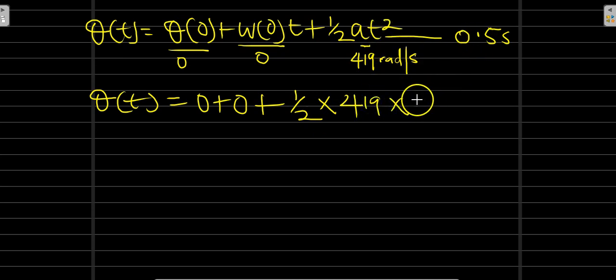Therefore we're going to have theta of t equals 0 plus 0 is 0, and one-half times 419 times 0.5 squared. 0.5 squared is going to give you 0.25. Therefore once we multiply this, we can use a calculator to get our final answer. We have something like 52.375 radians.